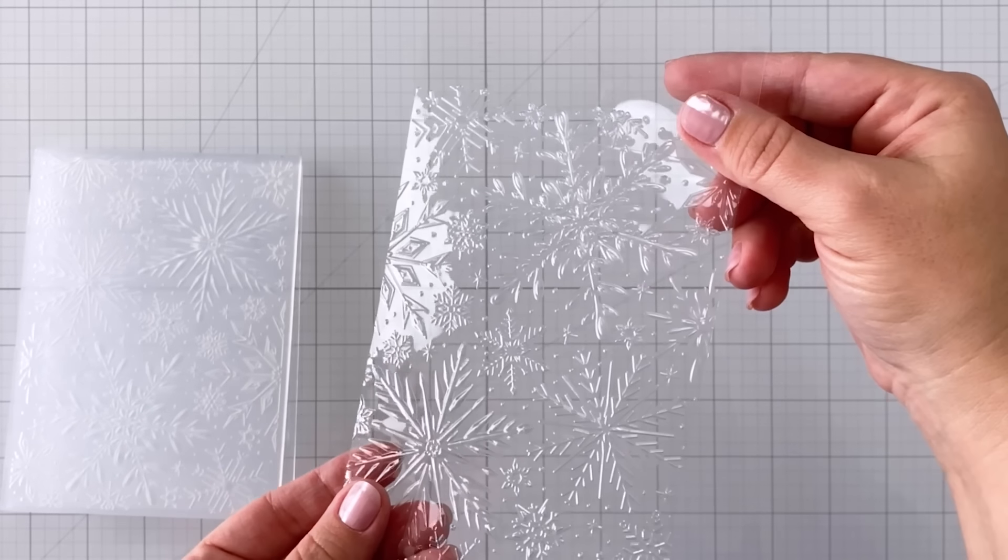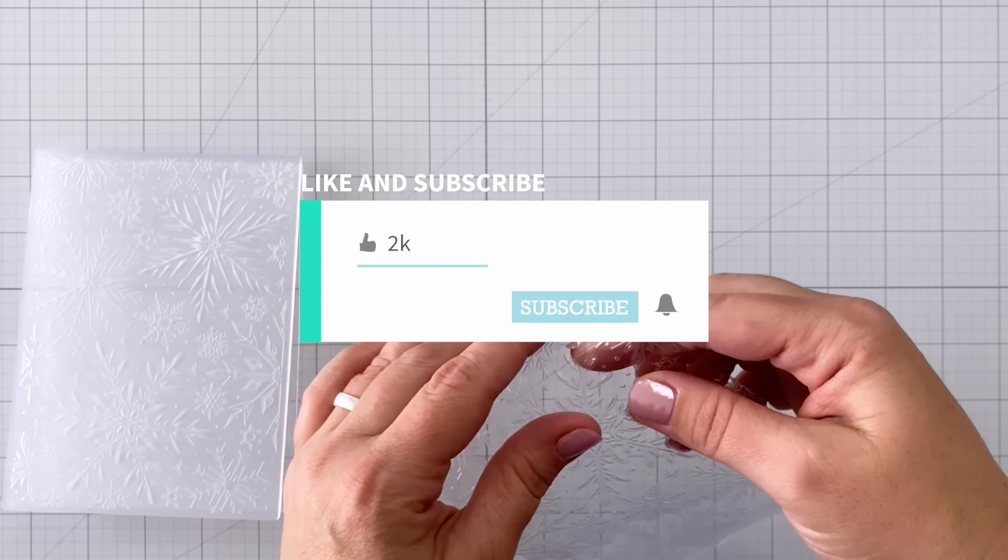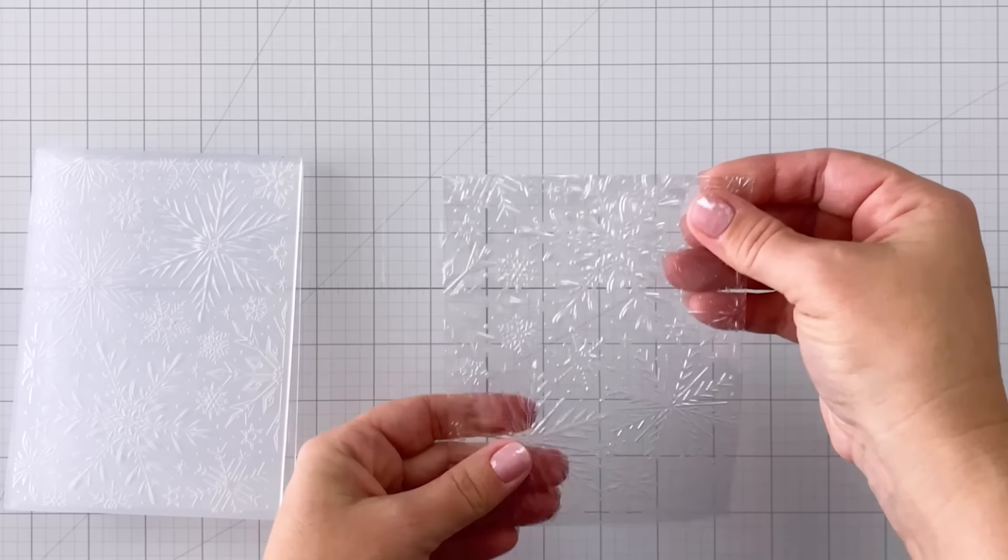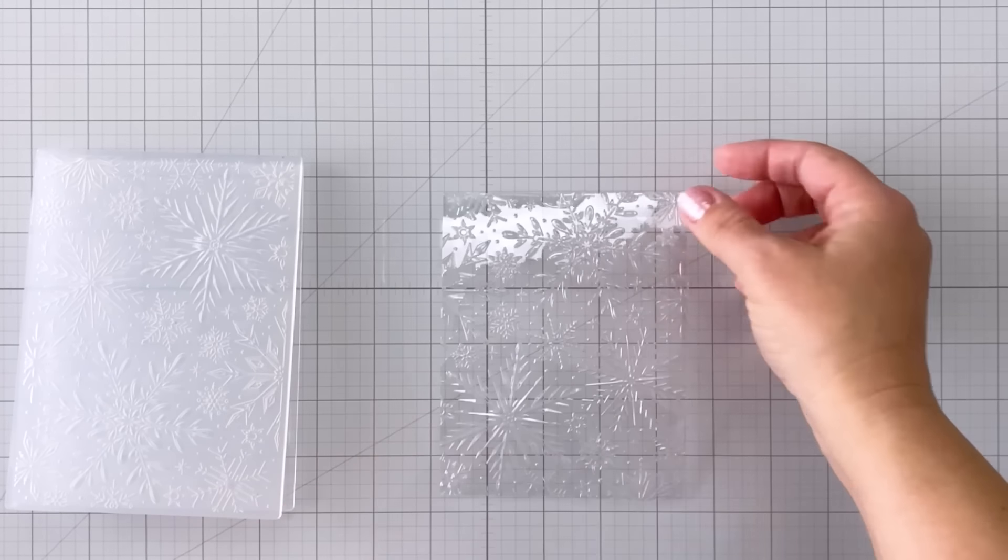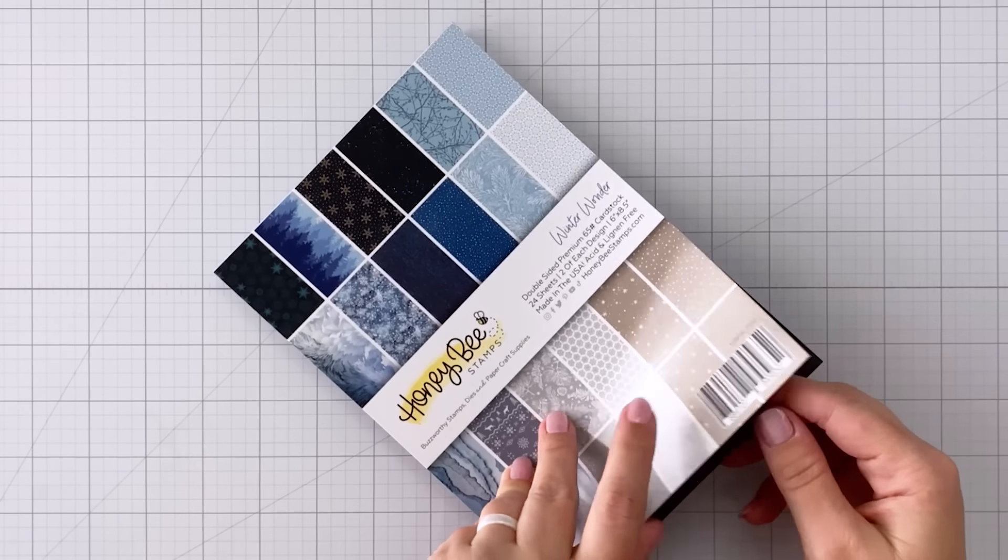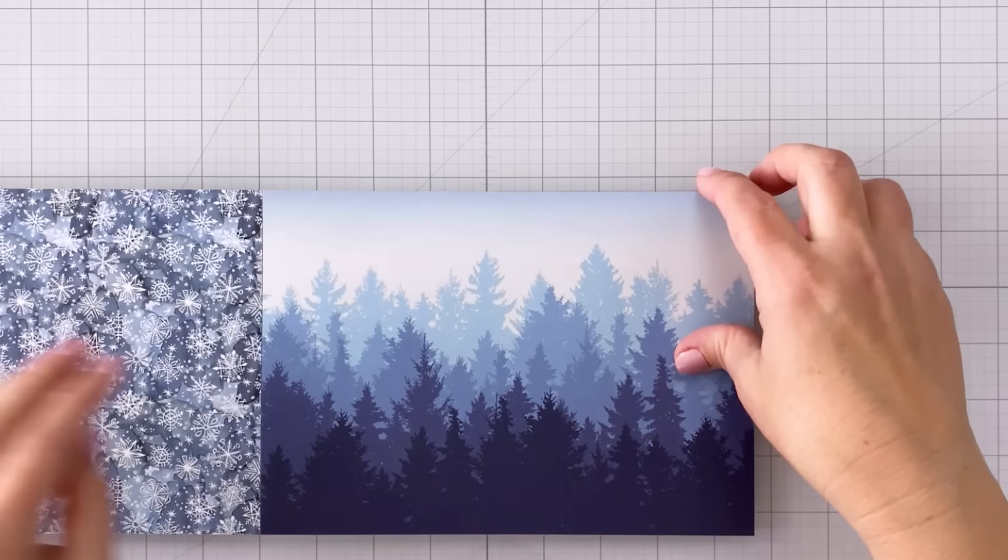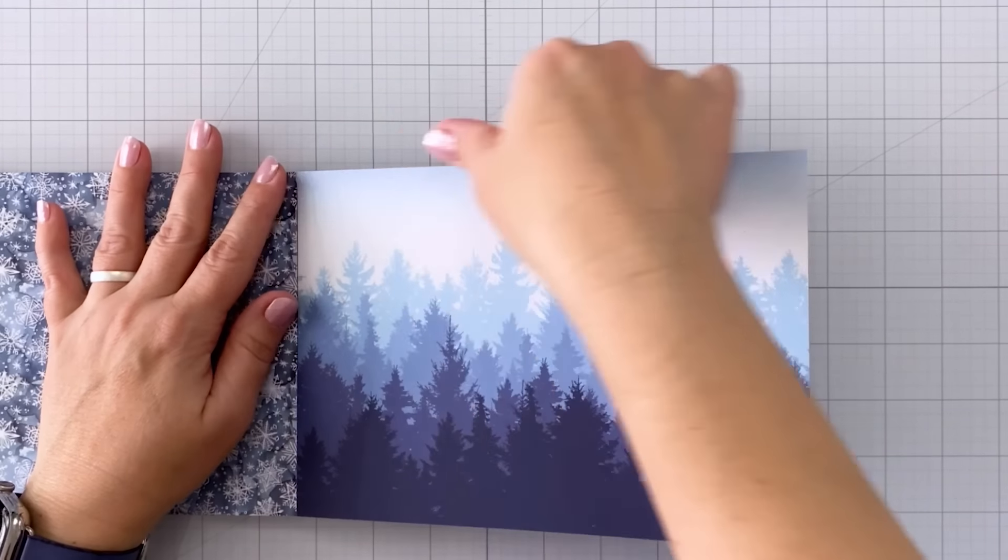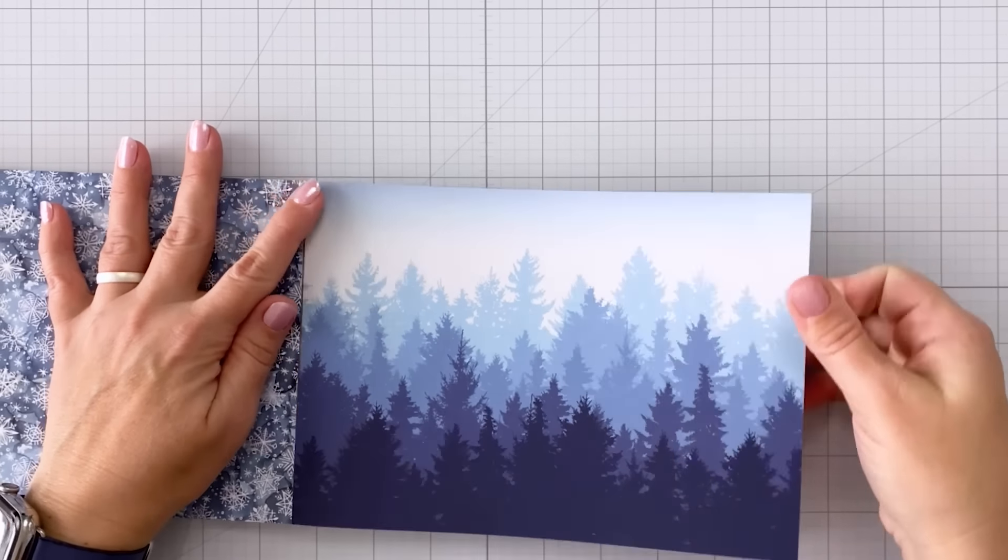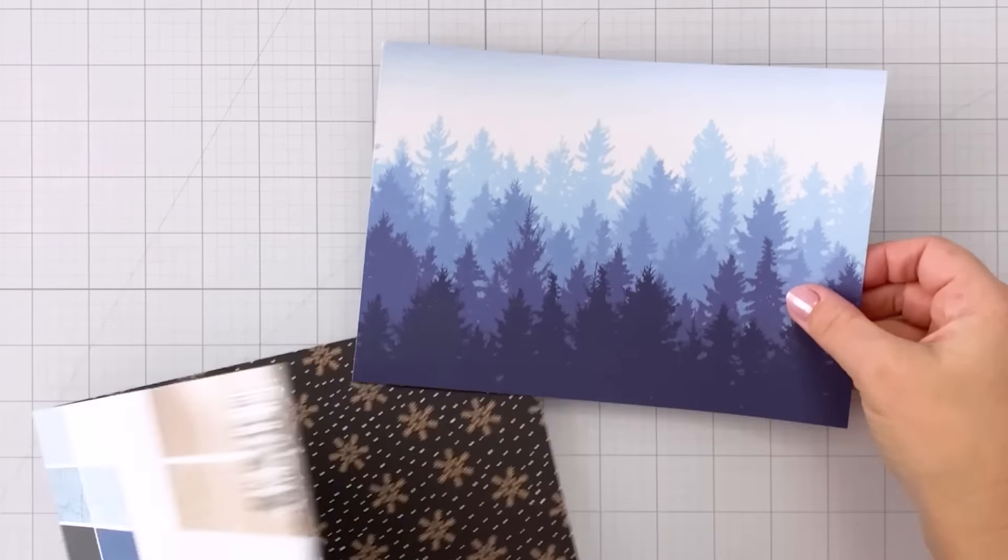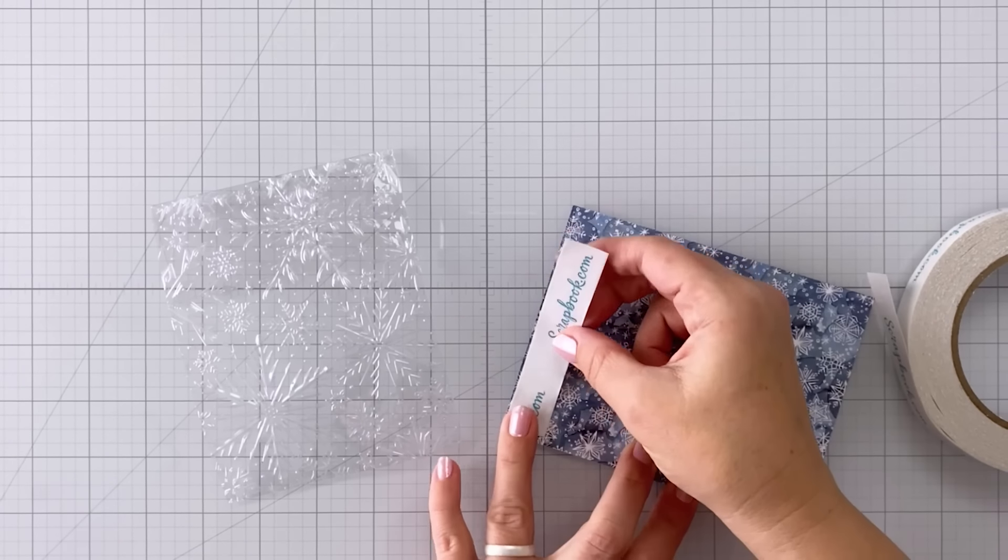Once you pull it out of the machine you can see there all of that beautiful snowflake detail and you can very easily fold that score line back over. There are a lot of different things you could use underneath your acetate. I've chosen here to use the Winter Wonder paper pack because there is this gorgeous piece with the tree line and all different shades of blue.